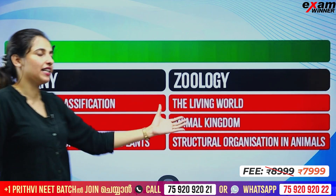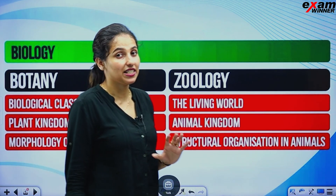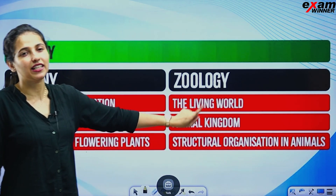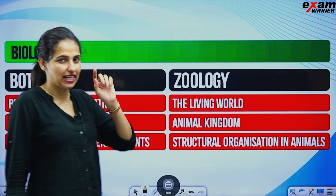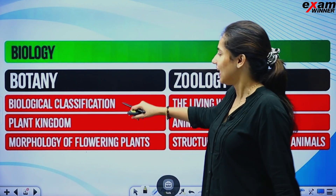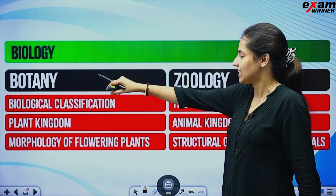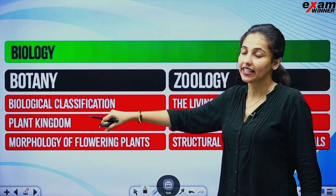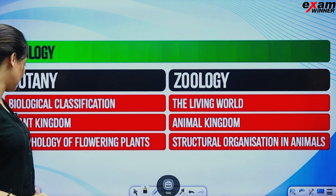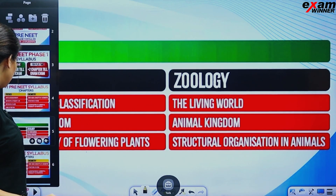Then we will examine all of biology — Botany and Zoology. In Zoology: The Living World, Animal Kingdom, and Structural Organization in Animals. In Botany: Biological Classification, Plant Kingdom, and Morphology. These six chapters are in biology.